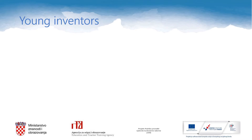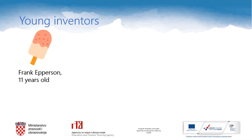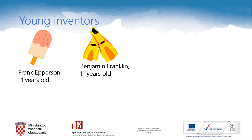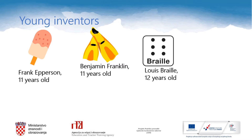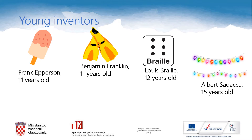Did you know that kids and teenagers invented some devices and items we use nowadays? Let's take a look at some examples. This is a popsicle, and Frank Everson invented it when he was only 11 years old. Next, Benjamin Franklin invented flippers when he was also 11 years old. Louis Braille invented the Braille alphabet at age 12, and the inventor of Christmas lights was only 15 years old when he invented them. His name was Albert Sedaka.